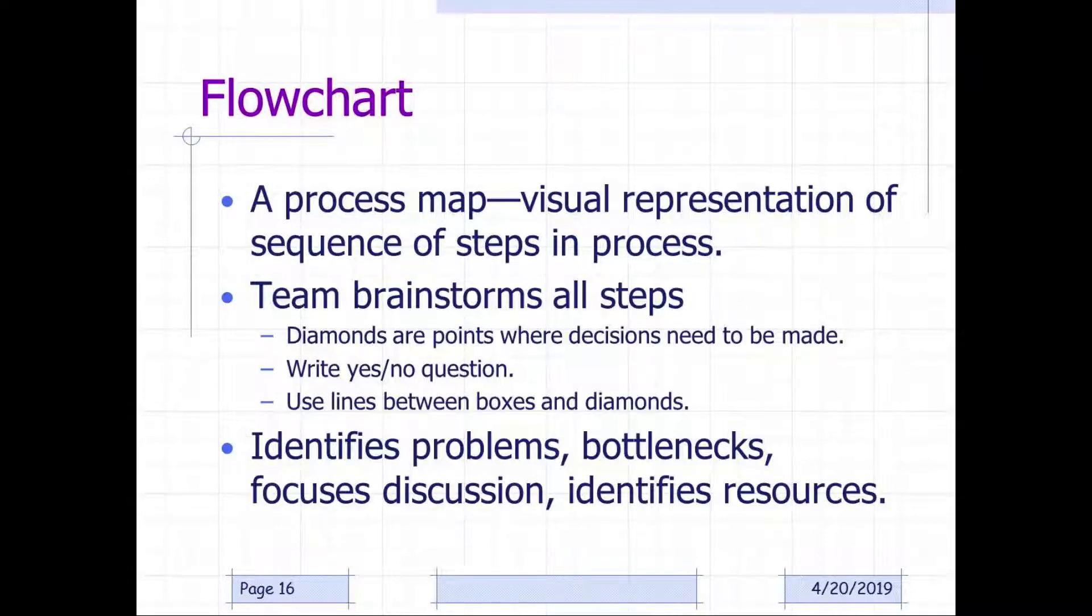So a flowchart is a process map. It's a visual representation of the sequence of steps in a process. A team brainstorms all the steps. Diamonds are points where decisions need to be made, and you write yes or no questions, and you use lines between the boxes and diamonds. It identifies problems, bottlenecks and focuses the discussion, and identifies resources.